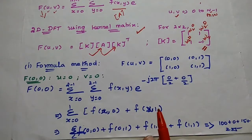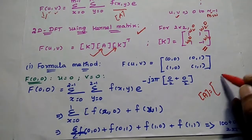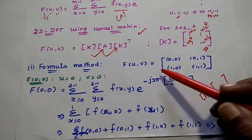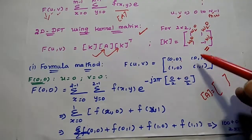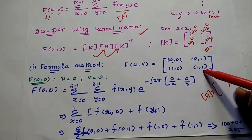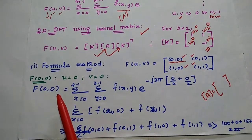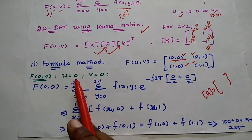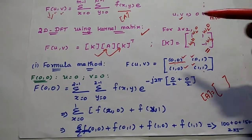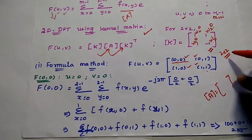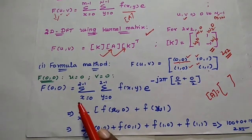For a 2 by 2 matrix, it is very easy to obtain all 4 coefficients. The input image is a 2 by 2 matrix, and the transformed signal is also a 2 by 2 matrix. That is, there are 4 coefficients at positions F(0,0), F(0,1), F(1,0), and F(1,1). We are going to obtain all these values. First, we are going to take the first value F(0,0), where U is equal to 0 and V is equal to 0, and substitute these values in the formula.